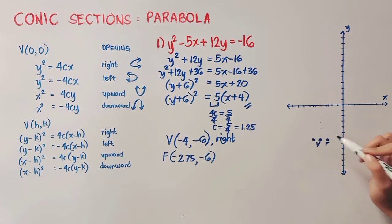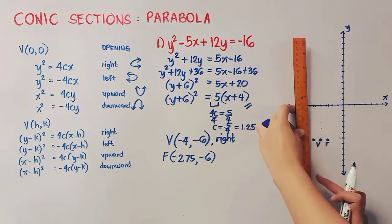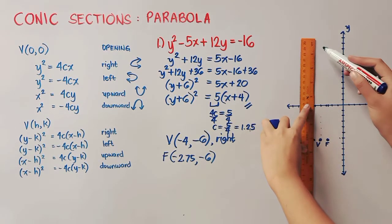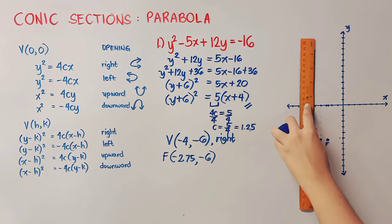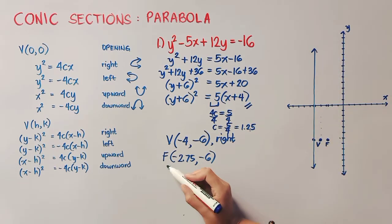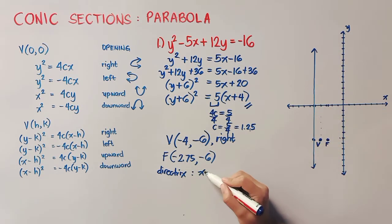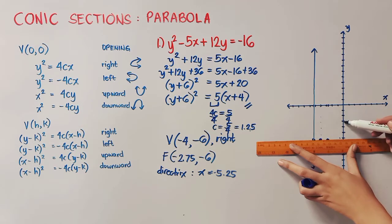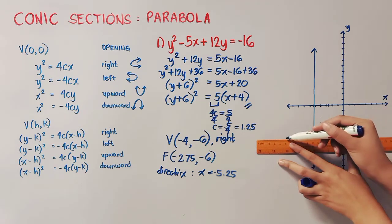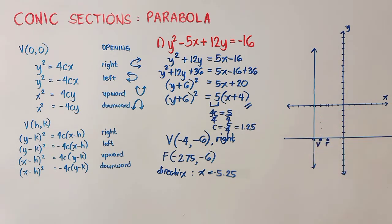Now our directrix is also 1.25 units from the vertex, but it is in the other direction. So it's here. So we will just have to make a line passing through that point. As you can see, this line passes through the x value, negative 5.25. Therefore, the line of our directrix is x equals negative 5.25. Now our line of symmetry passes through our vertex and our focus. So we'll just have to create this line here. And this is negative 6 in the y-axis. Let's just fix our points here. So our axis of symmetry is y equals negative 6.